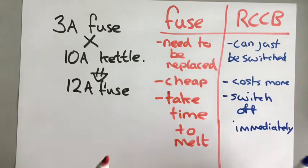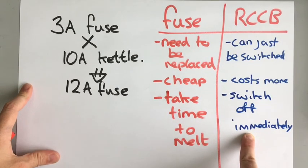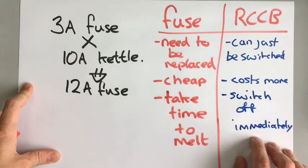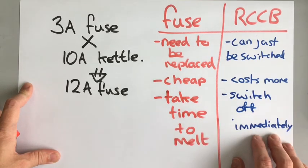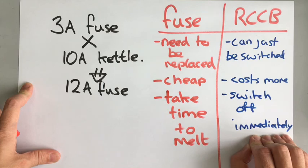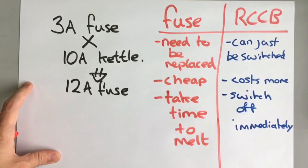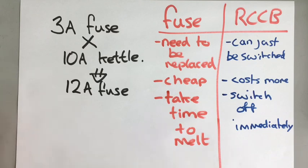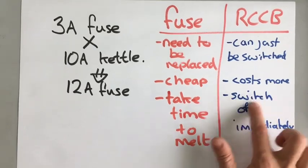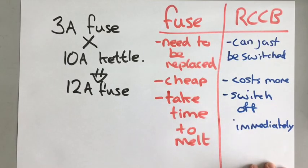So there's no delay, there's no chance of a fire starting with an RCCB because it switches off immediately as soon as an excessive current is detected. Whereas a fuse takes about a second or so to melt. So in that second a fire could start or something like that. So an advantage of an RCCB is it switches off immediately.